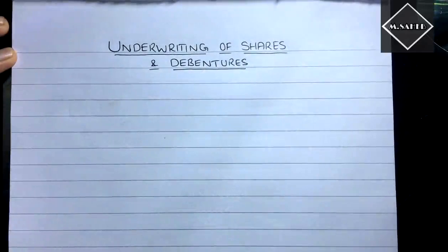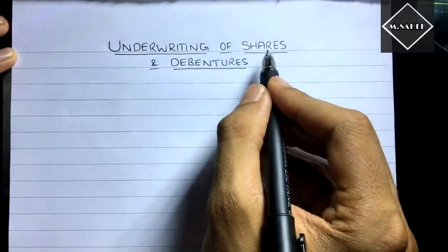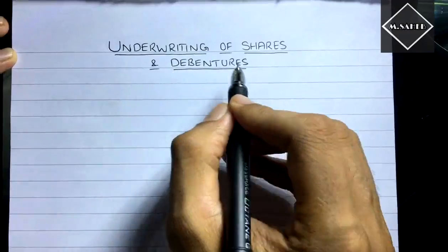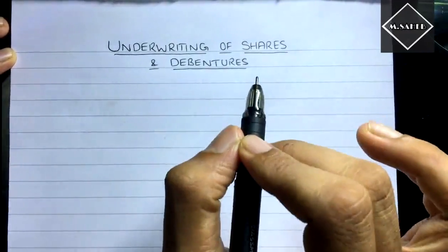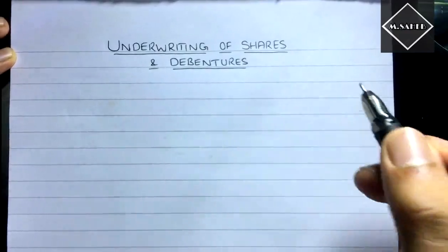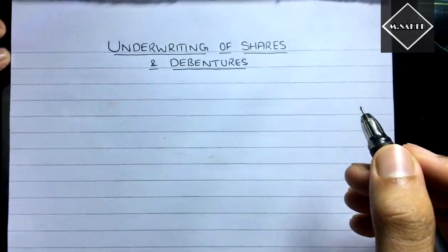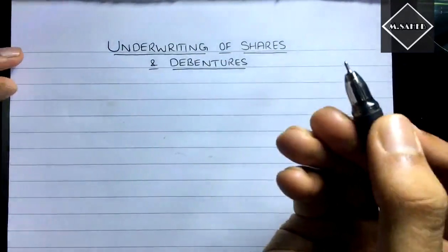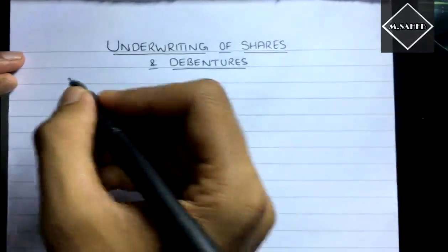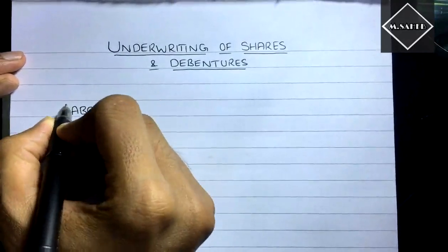Hi everyone. Today we are starting a new chapter from corporate accounts — that is underwriting of shares and debentures. This chapter is very simple and short, so let's start with a small example to understand the concept of underwriting.